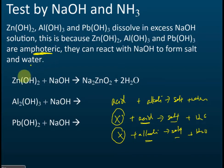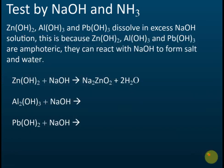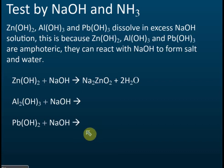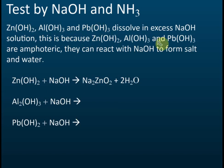So zinc hydroxide is amphoteric. As a hydroxide, it can react with acid; but it can also react with alkali — sodium hydroxide — to form salt and water. What's important is to know that zinc, aluminium, and lead hydroxides are amphoteric and will dissolve in excess sodium hydroxide solution.